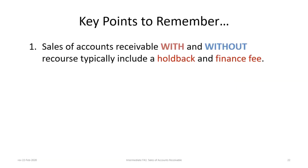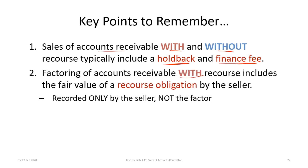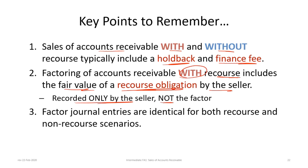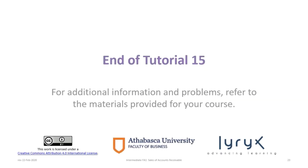Some key points to remember: sales of accounts receivable with and without recourse typically include a holdback and a finance fee. Factoring with recourse includes the fair value of a recourse obligation estimated by the seller — it is recorded only by the seller, not the factor. Finally, factor journal entries are identical for both recourse and non-recourse scenarios. That concludes tutorial 15 on accounting for the sale of accounts receivable. We hope you found it useful.